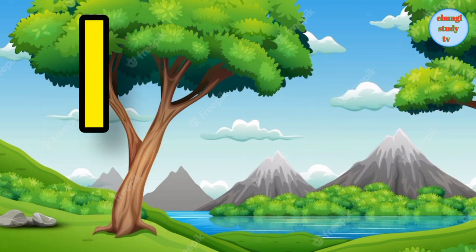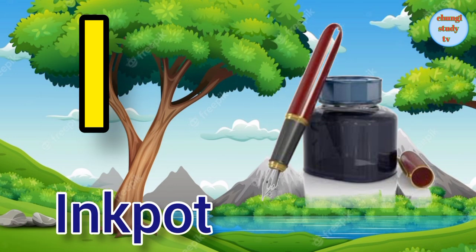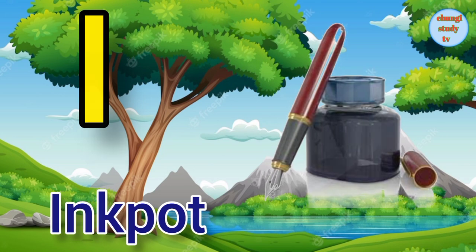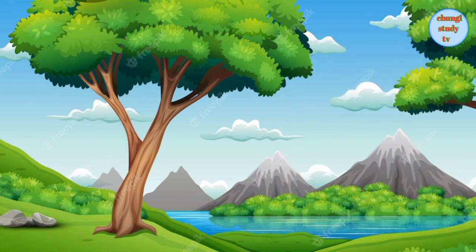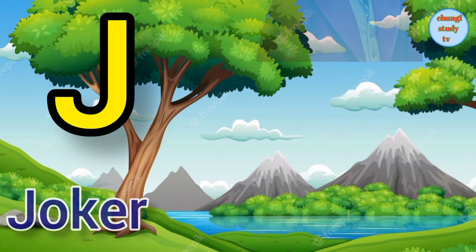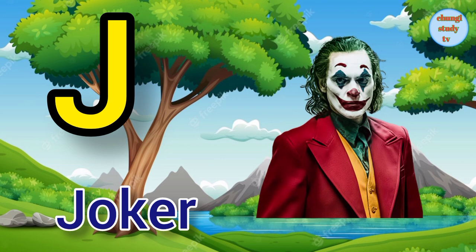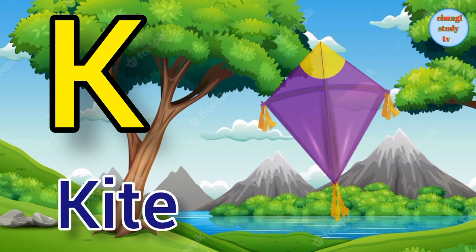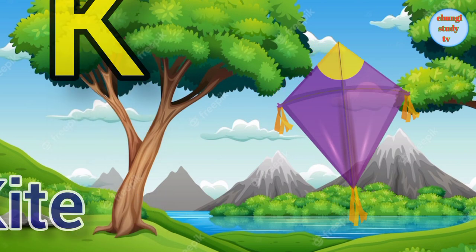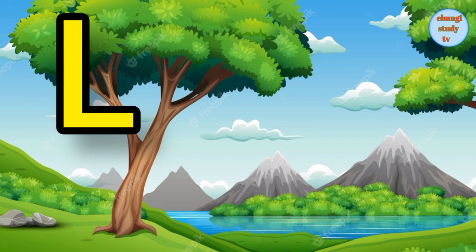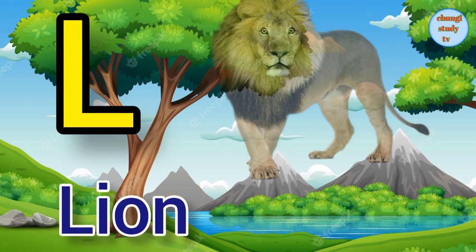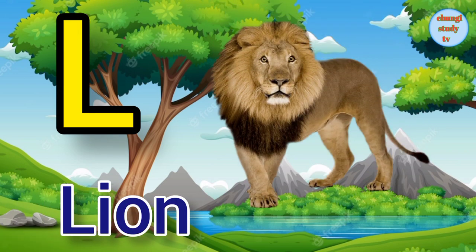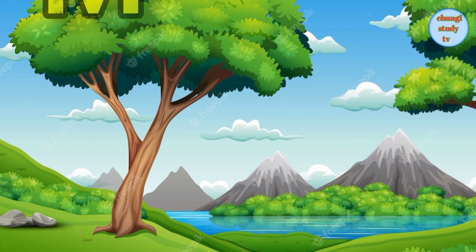I. I for inkpot, inkpot means dabat. J. J for joker, joker means joker. K. K for kite, kite means patang. L. L for lion, lion means seed.